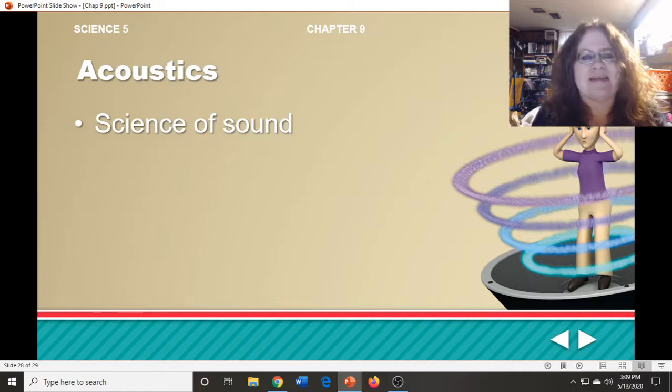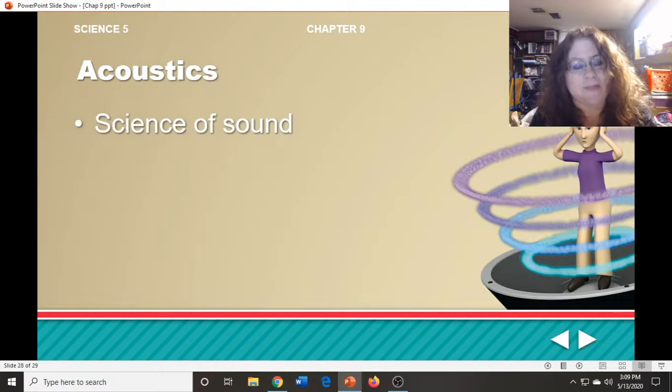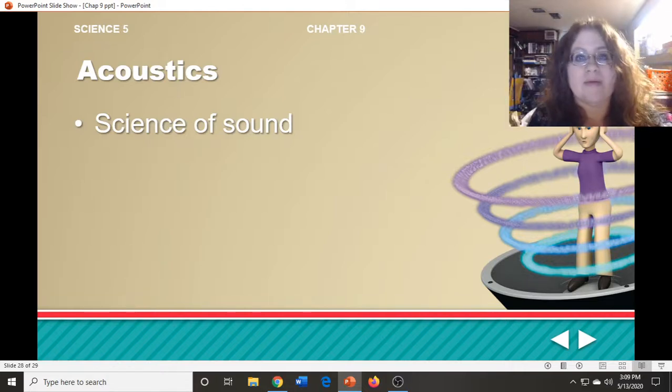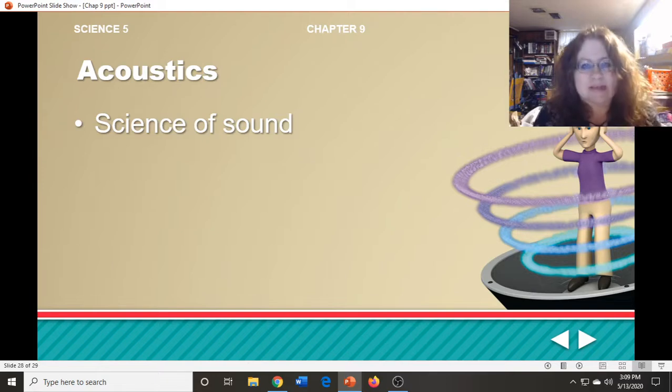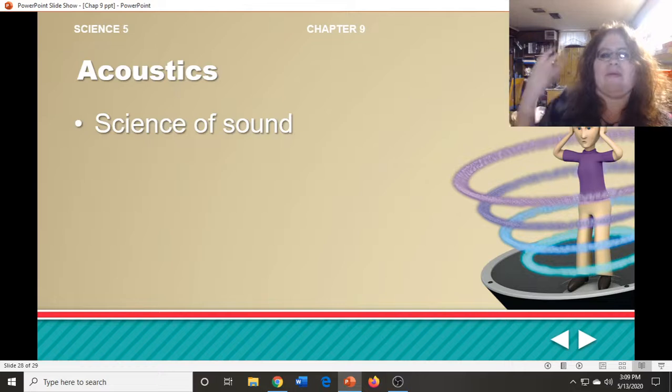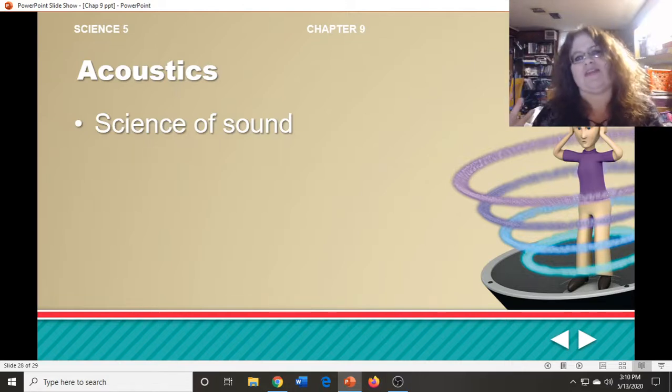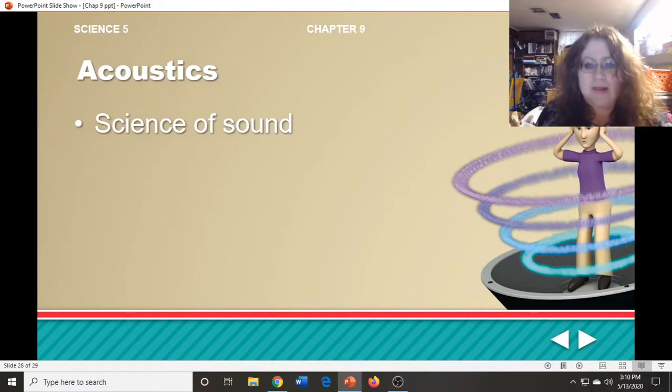Usually when I teach this, I tell everybody the next time they go into the gym, to look up at the ceiling. Of course, we're not at school now, so you can't look up at the ceiling of the gym. But if you remember, you will see those big squares of soft, fuzzy material up on the ceiling of our gym. That is to help absorb some of the sound in the gym. When you're in there having PE class, you're really loud, and the walls of the gym are smooth and reflect sound. So they have that soft, fuzzy material up on the ceiling that absorbs some of the sound. It keeps it from having such a harsh echo. The next time we do get to go to school, look at the ceiling of the gym and you will see those fuzzy tiles up there. That is all part of the science of acoustics.